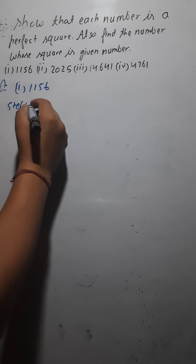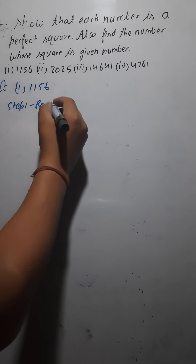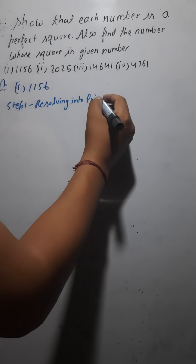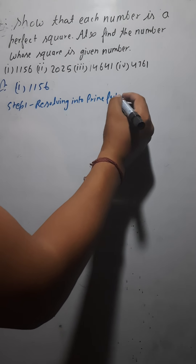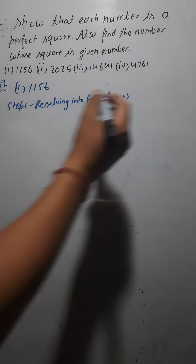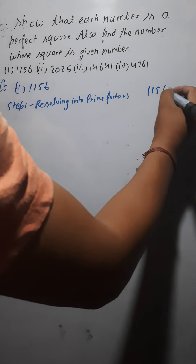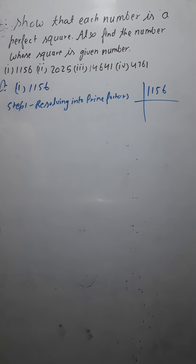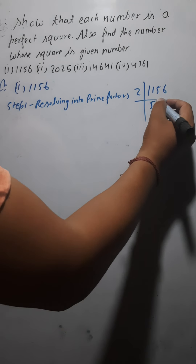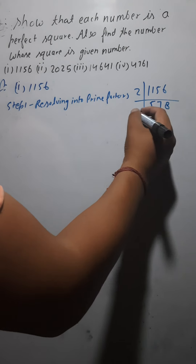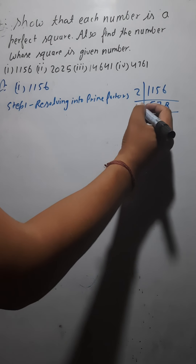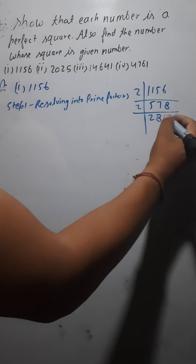Step number one is resolving into prime factors. If you are finding out the factors of 1156 — it is divisible by 2. Dividing gives 578. Again, the last digit is 8, so it is again divisible by 2, giving 289.